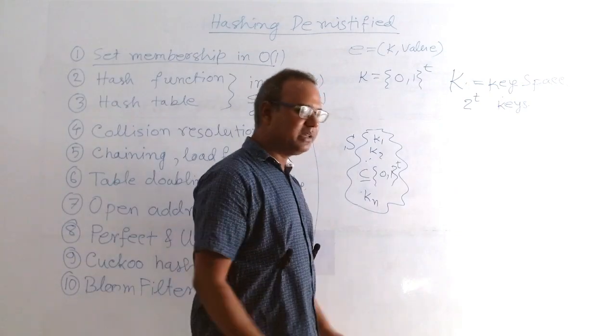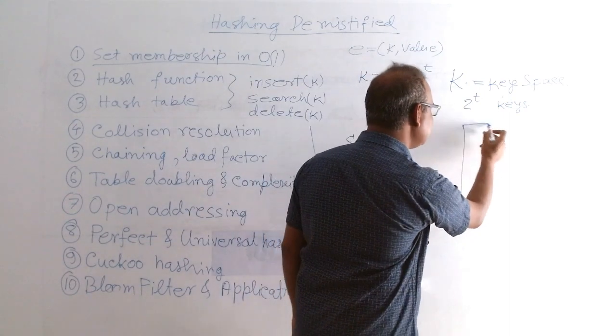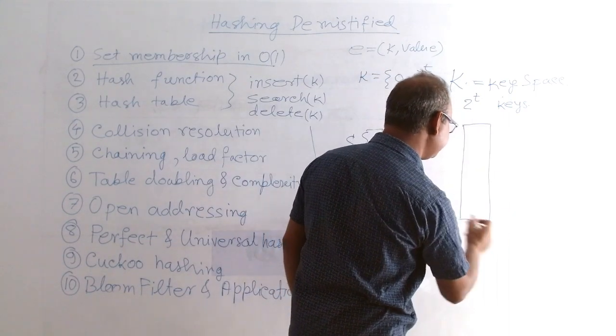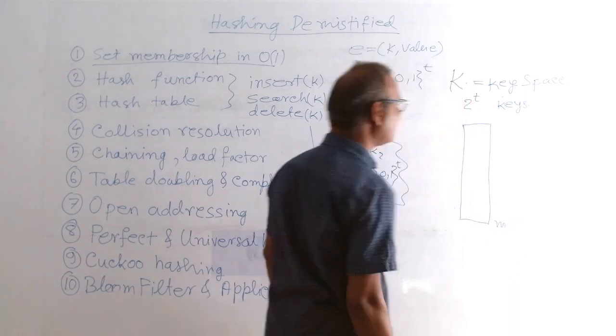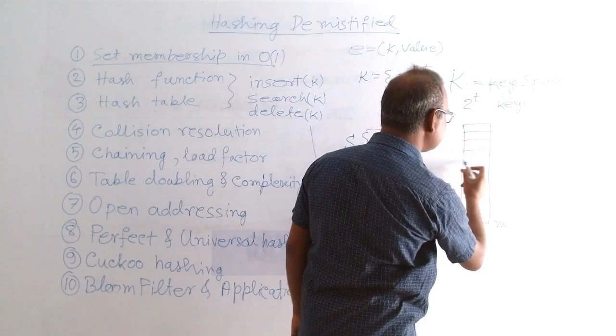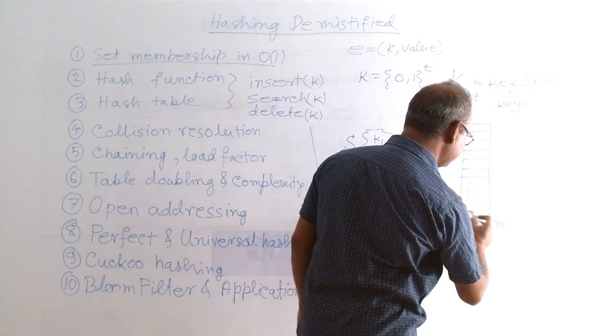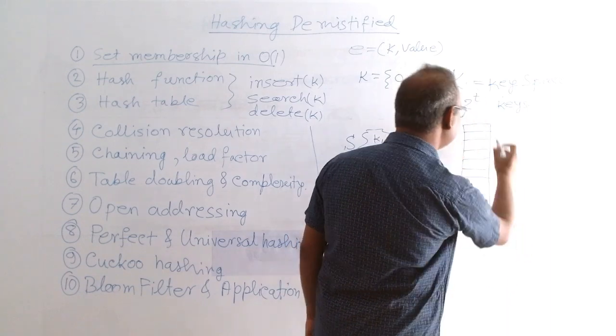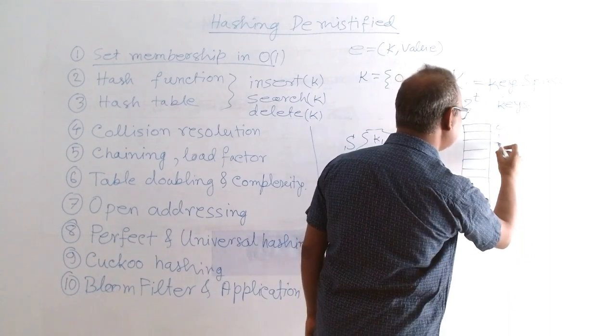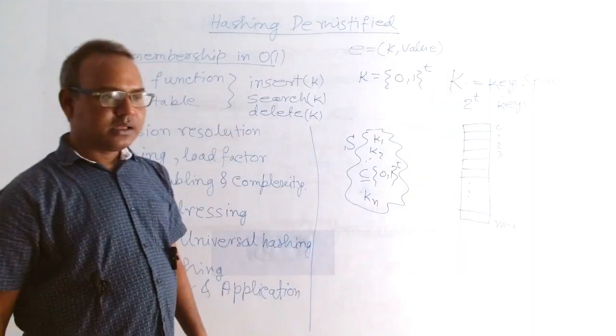That is the domain size and we are mapping into a table of size m. Let's say, let me put the indexes. This is m minus 1, this is 0, 1, 2, 3.